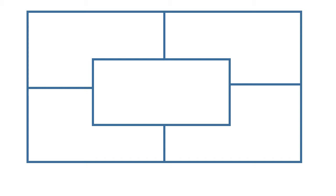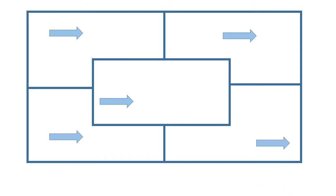Here is our graphic organizer. As you know, we write our topic sentence in the center. A topic sentence is a group of words that expresses a complete thought. Remember, a sentence begins with a capital letter and ends with a punctuation mark. It has a subject as well as a predicate. Around that center square are four other squares, and in those squares we are going to write our supporting ideas. Our supporting ideas will support our topic sentence.